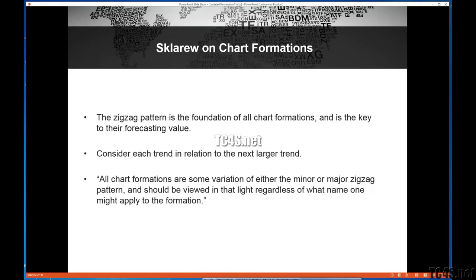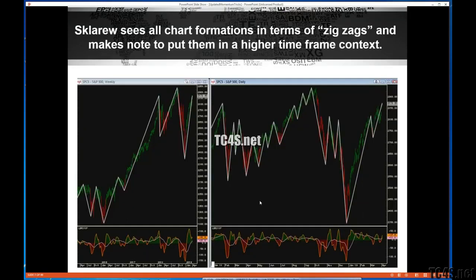My charts use average true range or red-green-red bars, which I've published on many webinars — that's strictly defined by an average true range structure. The nice thing is we can quantify it so there is no gray area; the computer says black and white. Sklarew always put things in a context, framing out the zigzags in terms of the higher time frame zigzag. He didn't get caught up in the names of things — he just always looked at the rhythm of them.